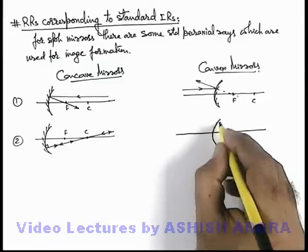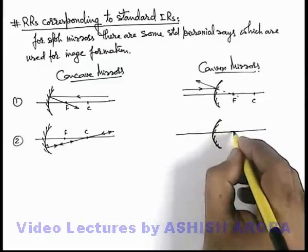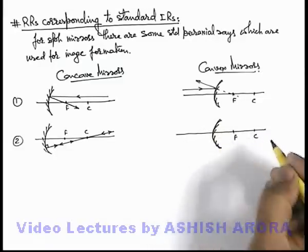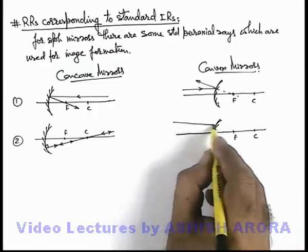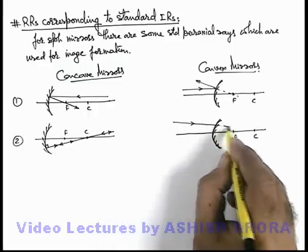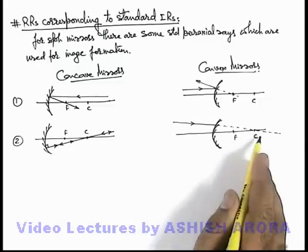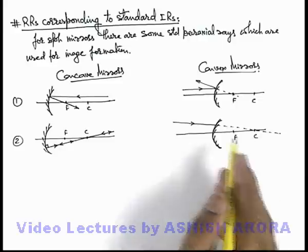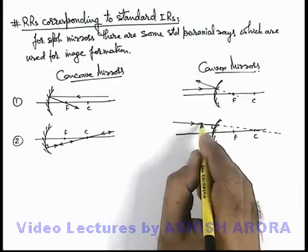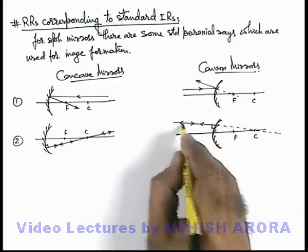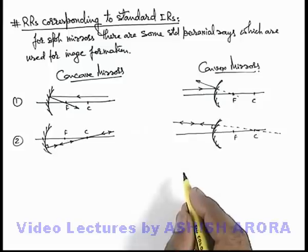The same phenomena takes place in case of the convex mirror. If a light ray is incident onto it such that the light appears to pass through the center of curvature, then it will be normally incident on the mirror, so it will also be backtracing the ray as it is.